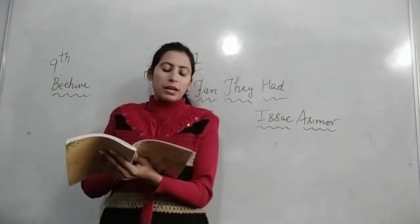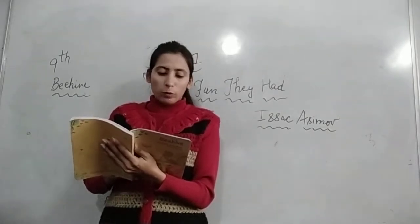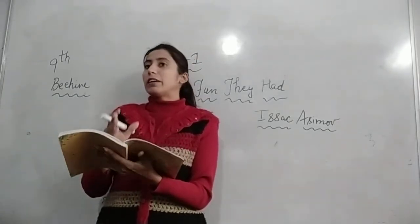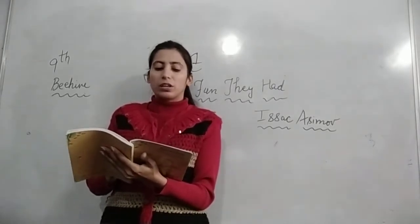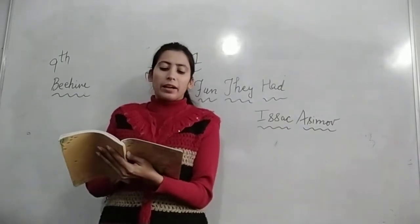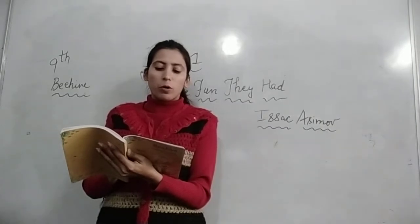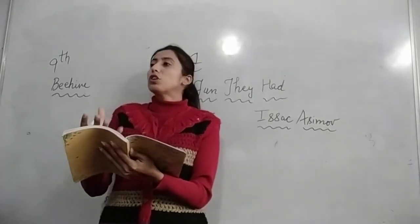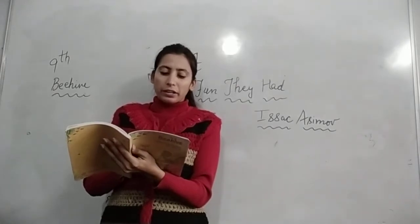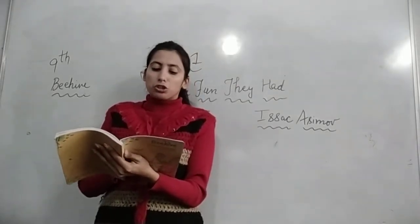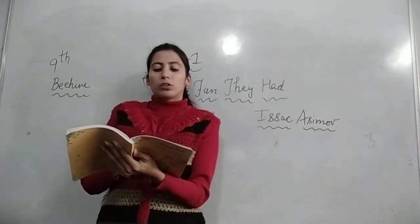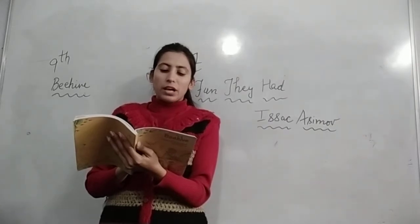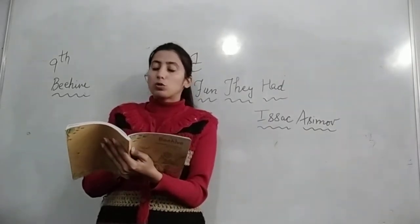Sure they had a teacher, but it was not a regular teacher — it was a man. Tommy ने कहा हाँ, वो teacher थे, बट वो regular teacher नहीं थे — वो इंसान थे, आदमी हुआ करते थे. How could a man be a teacher? Margie ने कहा — एक आदमी कैसे teacher हो सकता है? Well, he just told the boys and girls things and gave them homework and asked them questions. A man isn't smart enough. Margie ने कहा एक man इतना smart तो नहीं हो सकता. Sure he is — my father knows as much as my teacher, he knows almost as much, I betcha. Tommy ने कहा मेरे father भी उतना ही जानते हैं जितना एक teacher, बल्कि उनसे भी ज्यादा जानते हैं.